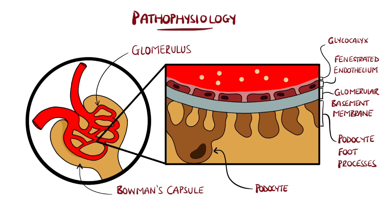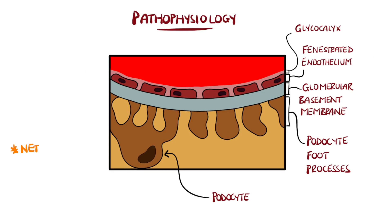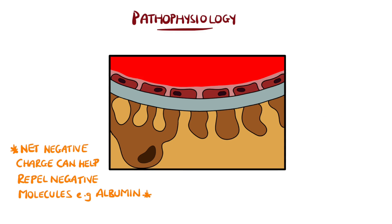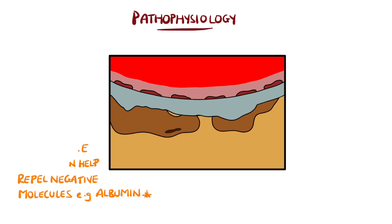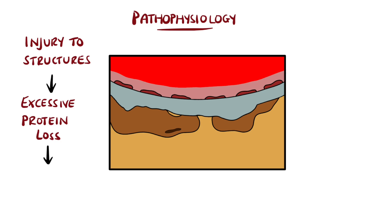They have a net negative charge, which means that they can repel other negatively charged molecules. In nephrotic syndrome, there is sufficient injury to these structures to change the permeability and allow albumin and other molecules to pass into the urine, leading to hypoalbuminemia.